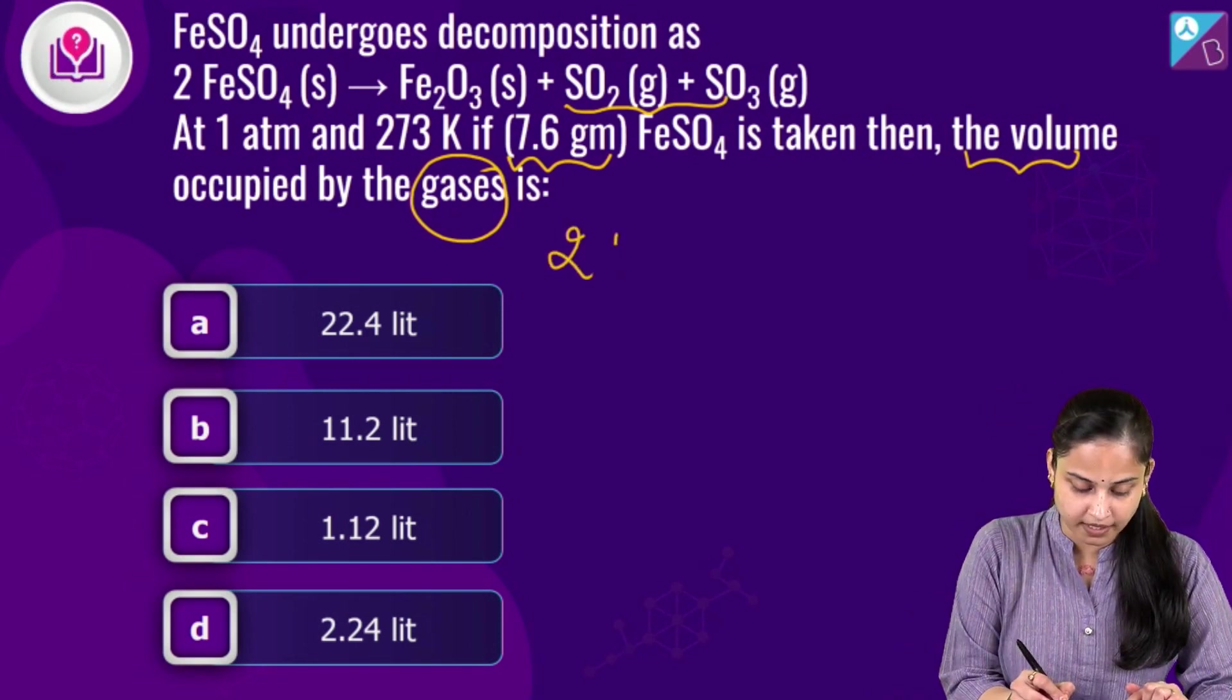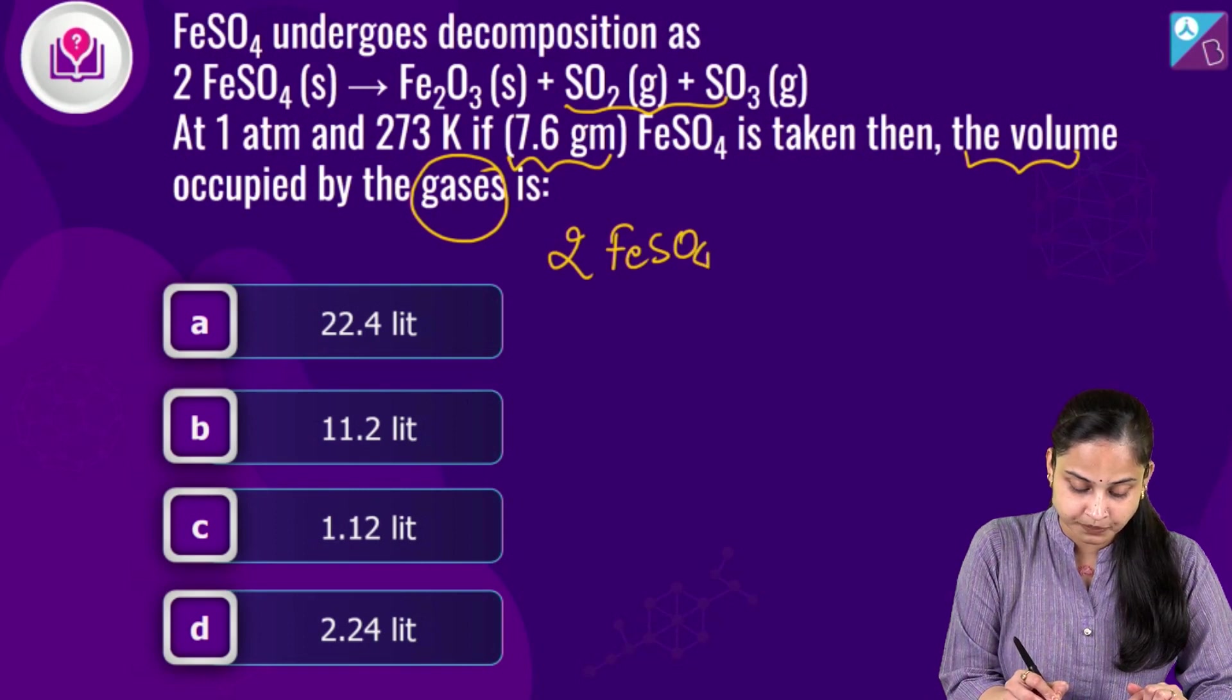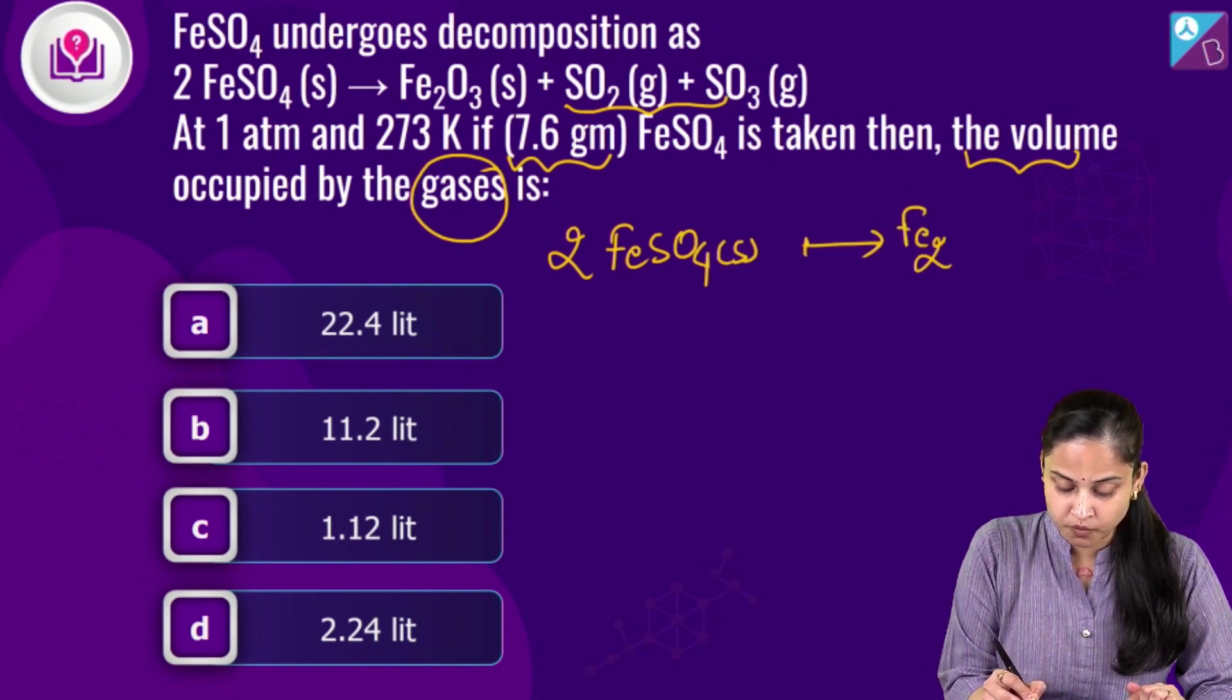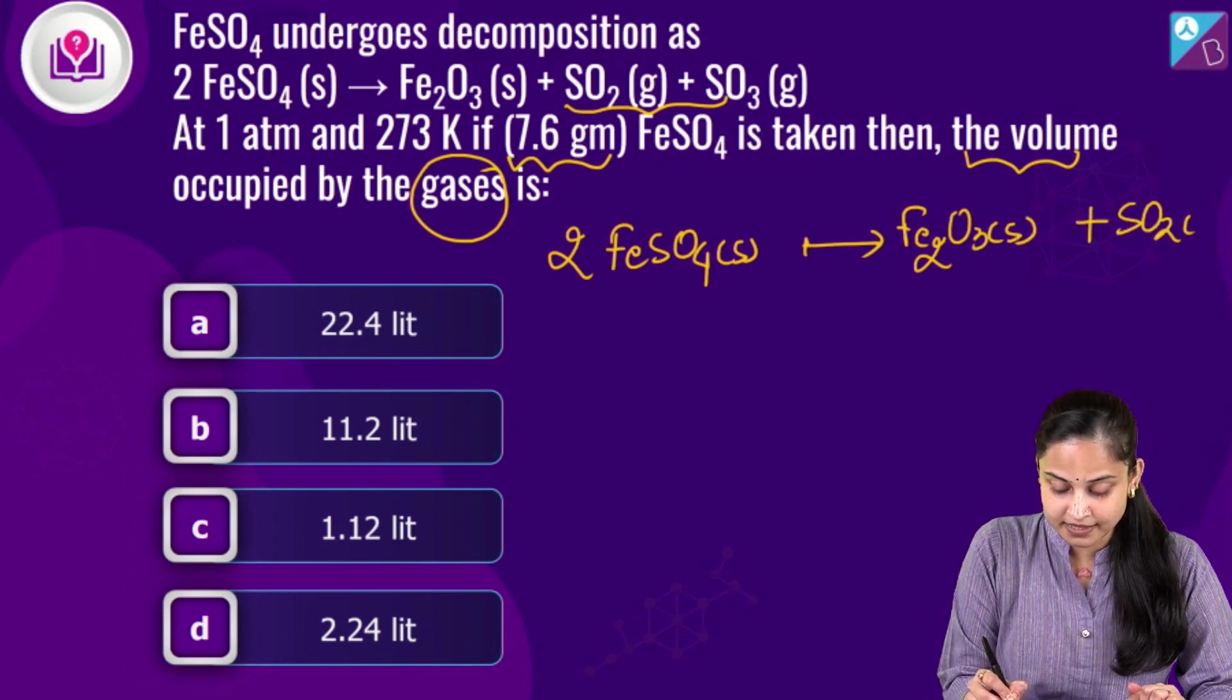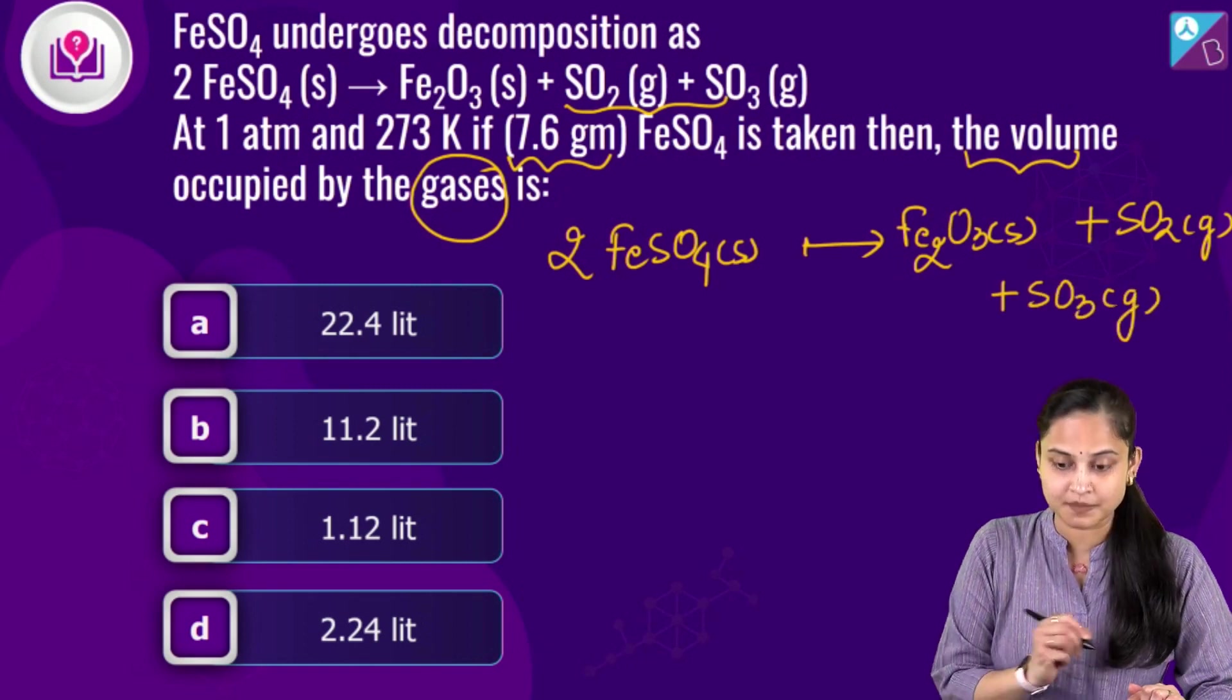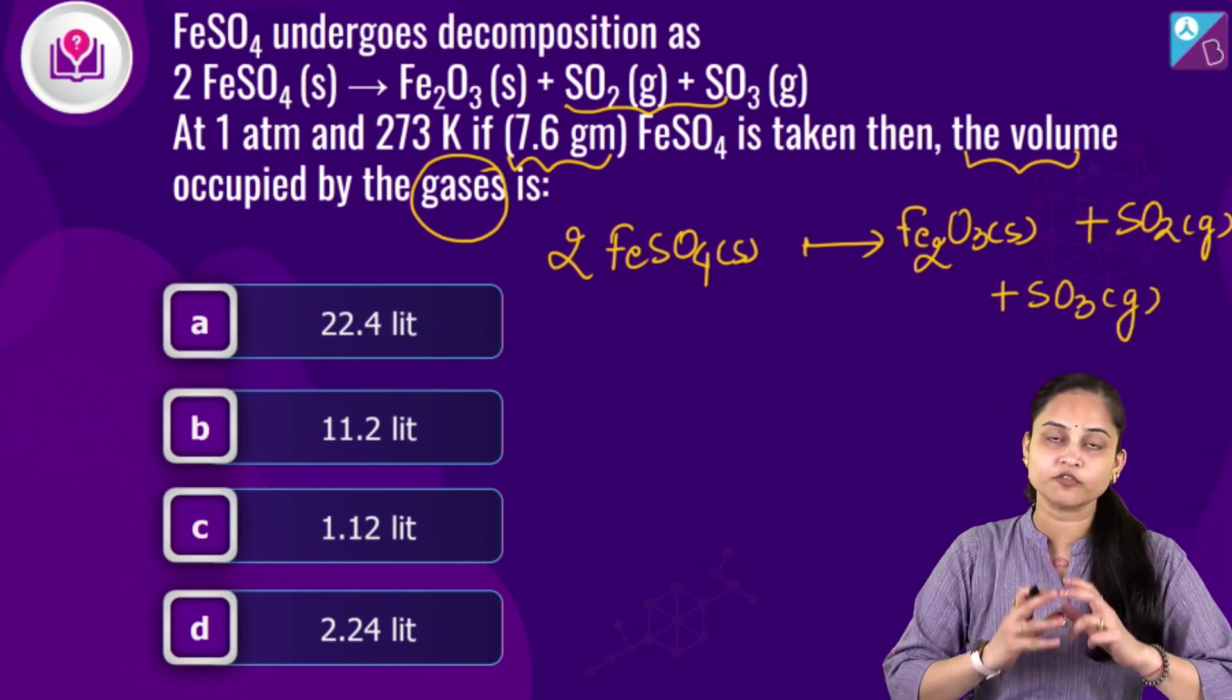Now, if I just write this equation again: 2 FeSO₄ in the solid state giving us Fe₂O₃ in the solid state plus sulphur dioxide in the gaseous state plus sulphur trioxide in the gaseous state.